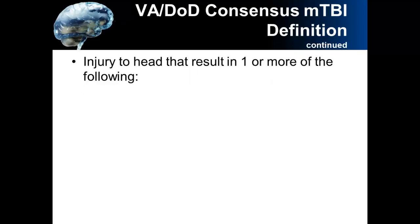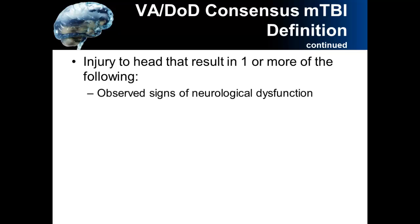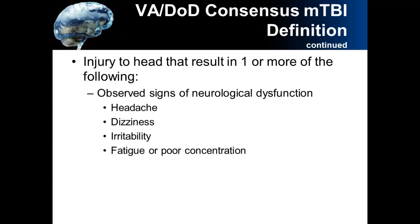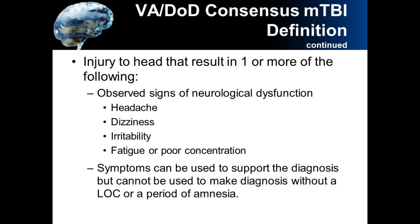These are categories that fall under the injury to the head that results in one or more of the following. In addition, there can be other symptoms that can be used to support the diagnosis of a concussion, but additional symptoms cannot be used to make the diagnosis without a loss of consciousness or a period of amnesia.